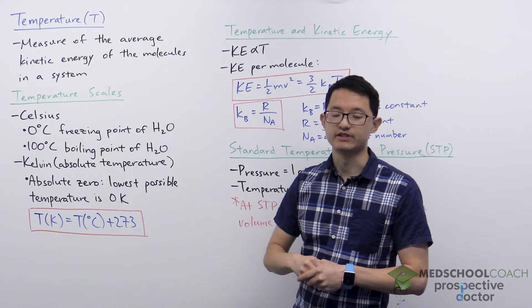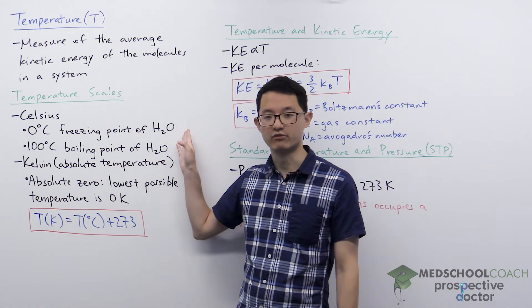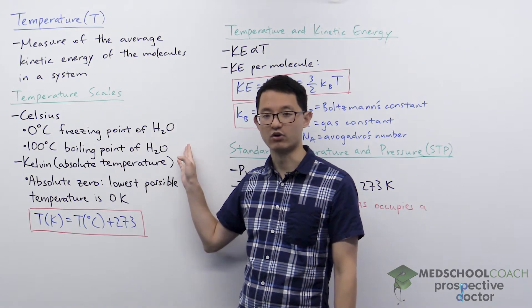The Celsius scale is defined around water. So as you know, zero degrees Celsius is the freezing point of water and 100 degrees Celsius is the boiling point of water.